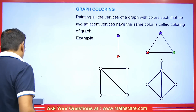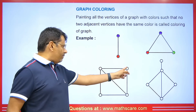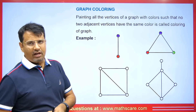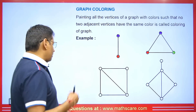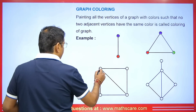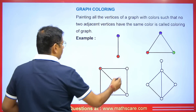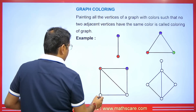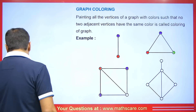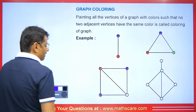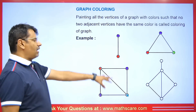This graph is not complete because not all vertices are connected to each other. If every vertex is connected to every other vertex, we have a complete graph, and the number of colors used equals the number of vertices. Since that's not the case here, if I choose red for one vertex I cannot use red elsewhere, so I will use purple for another vertex. The current coloring requires three colors in total.